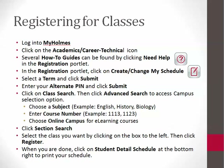Once you have reviewed that handout, click on Create Change My Schedule in the Registration Portlet. Select a term and click Submit. Enter your alternate PIN number and click Submit. Click on Class Search, then click Advanced Search to access the Campus Selection option.